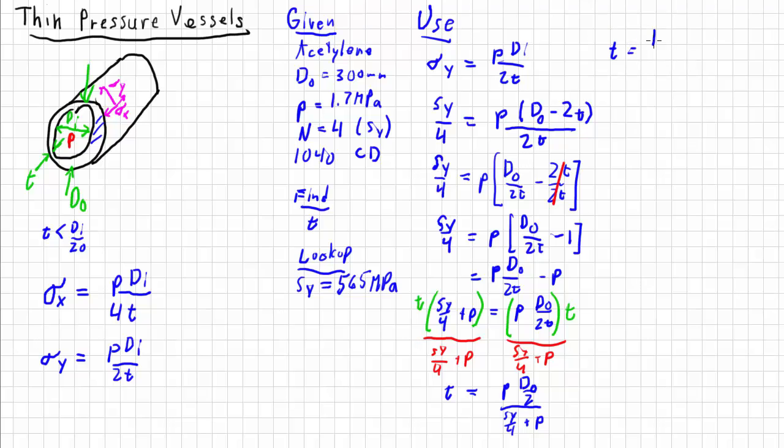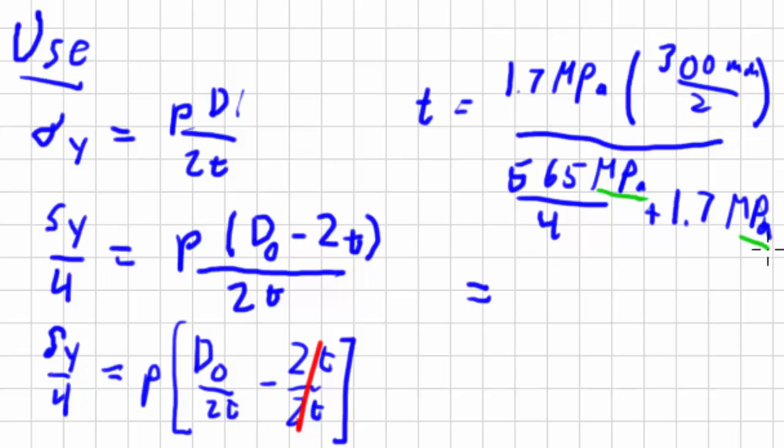So my pressure is 1.7 megapascals. My outer diameter is 300 millimeters all over 2. I'm going to take that, divide that by 565 megapascals all over 4 plus 1.7 megapascals. So when all that's calculated out, notice how the units work out quite nicely. I've got megapascals here, megapascals here. So everything on the bottom is megapascals. I've got megapascals here on the top. So I can cross out all those megapascals and all I'm left with are millimeters.